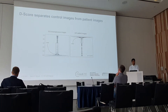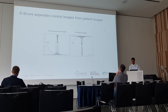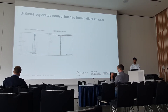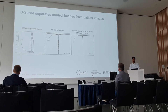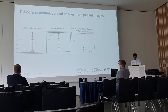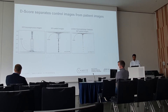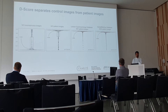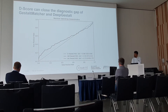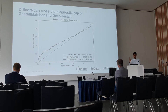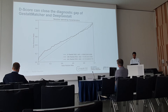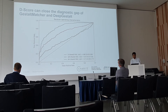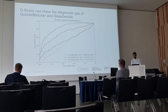Indeed, D-score yields low scores in unaffected controls — they tend to be near zero — and high scores in affected individuals — they tend to be near one. We tested this not only on our test set but also on images from the London Dysmorphology Database that were not part of the training set of Deep Gestalt or Gestalt-Matcher, and we found that these patient images also featured high scores. The same was true for more than 4,000 images from the Gestalt-Matcher database. D-score indeed outperforms the other tools and has the potential to close this diagnostic gap.